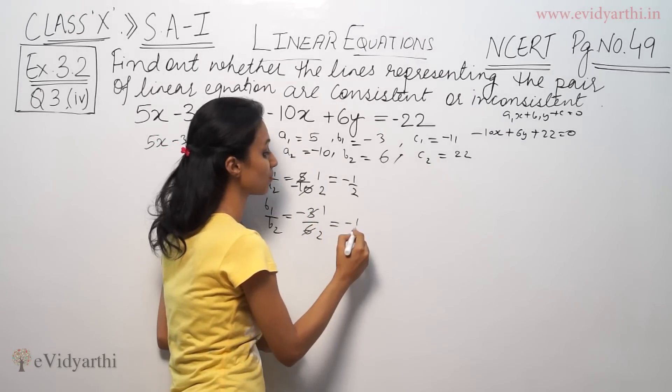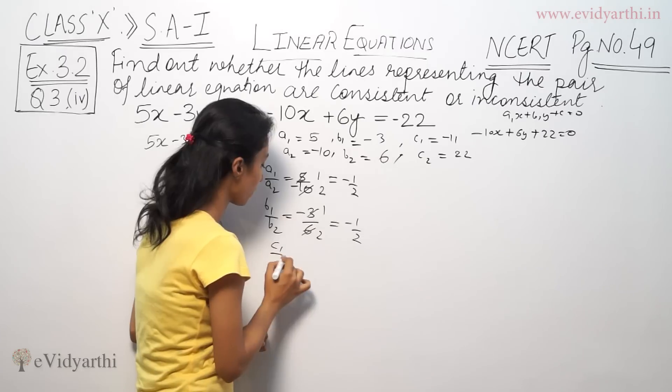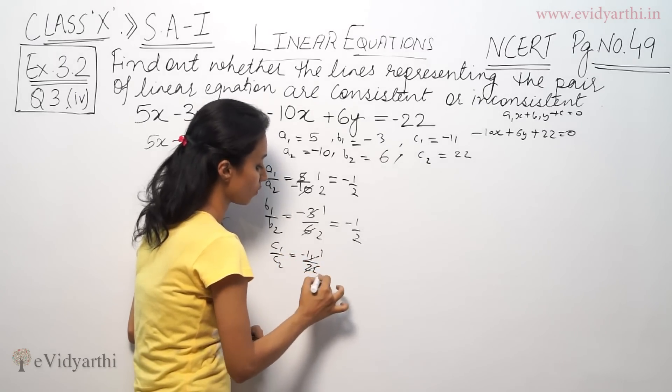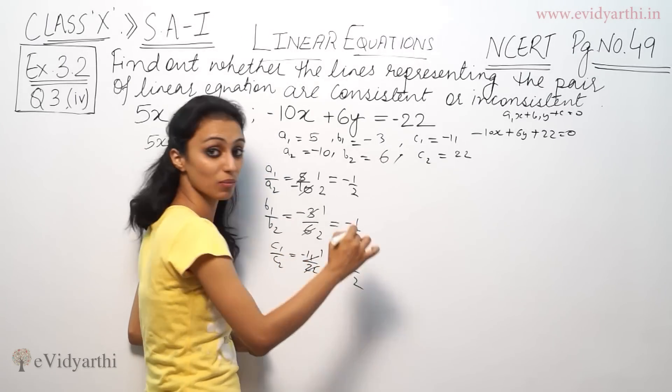3 twos are, that means minus 1 upon 2. c1 by c2, we have to take this equation, minus 11 upon 22. 11 twos are, minus 1 upon 2.